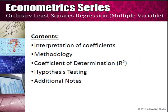The contents of this module are as follows. Firstly, we will talk about the most important aspect of multiple regression, i.e. the interpretation of coefficients. Secondly, we will briefly give the formulae for calculation of the OLS estimators. Thirdly, we will talk about the coefficient of determination R-square. Fourth, we will talk about hypothesis testing on R-square, and fifth, we will talk about additional notes.